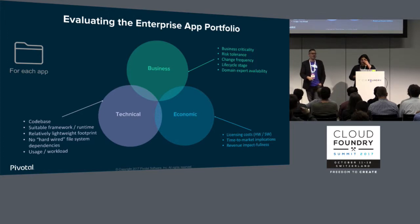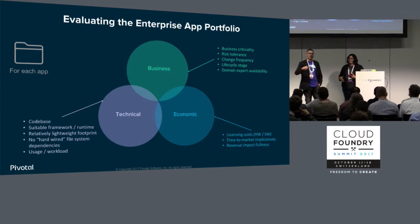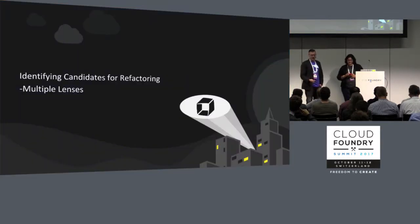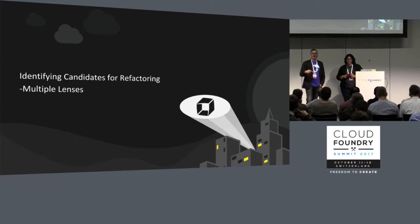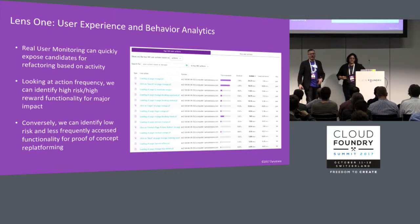Kamala walked through techniques for determining some sort of score to start prioritizing applications for the replatforming effort. What I'm looking to talk about is some unique applications of APM technology — specifically what Dynatrace is capable of doing very rapidly in an environment to start using that APM tooling information to build out that score for you.